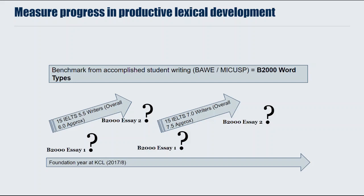I looked at the proportion in the accomplished student writing — first years who were getting good grades for their essays. Then I took some writers on our foundation year currently writing at IELTS 5.5, fifteen of those, with an average IELTS score of approximately six. I took an essay at the beginning of the year and measured the same beyond-2000 proportion at the beginning of the year, then measured it again at the end of the year — how much rarer vocabulary was appearing in their essays.